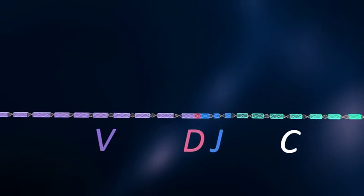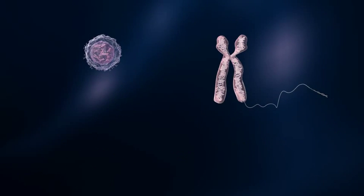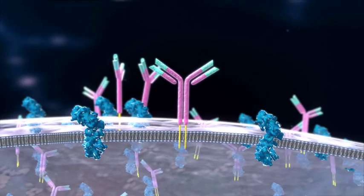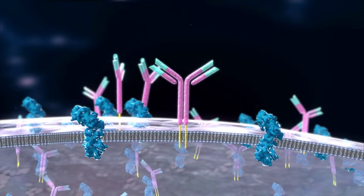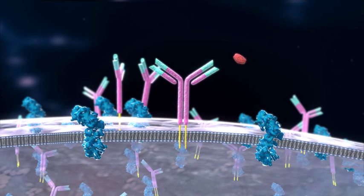Each B cell will produce only one type of antibody based on these recombination events. The antibody molecule now displays itself on the surface of the B cell, awaiting antigen to bind to it.